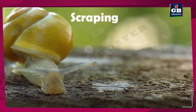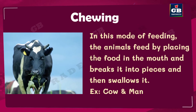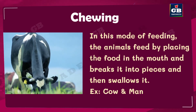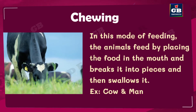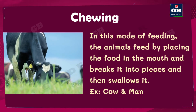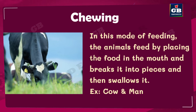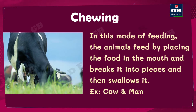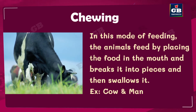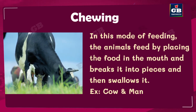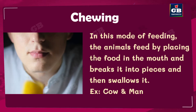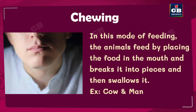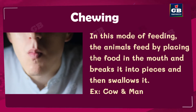The next one is chewing. This is a mode of feeding in which an animal places the food in the mouth, breaks it into pieces, makes it into a paste, and then swallows it. Examples are cow and man. We chew our food — that means we break the food into pieces, make it into a paste, and then swallow it. This mode of feeding is called chewing.